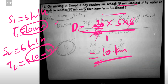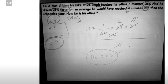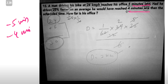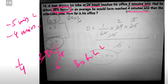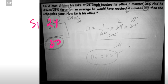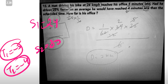The distance to school is 10 km. For the next problem: a man driving his bike at 24 km per hour reaches 5 minutes late. If he goes at 30 km per hour — since speed is more, 24 plus 6 equals 30 km per hour — he reaches 4 minutes early. So the first speed S1 is 24 and the second speed S2 is 30.